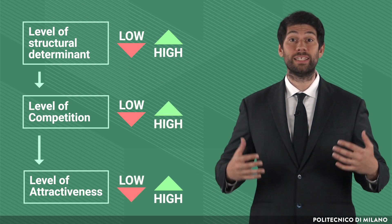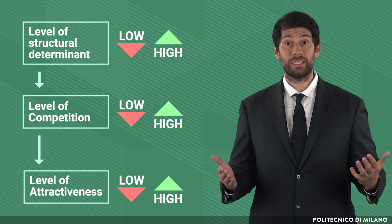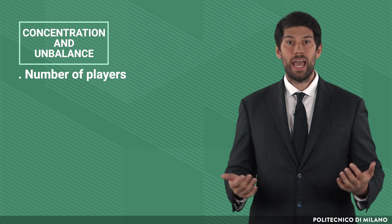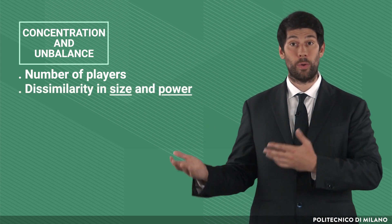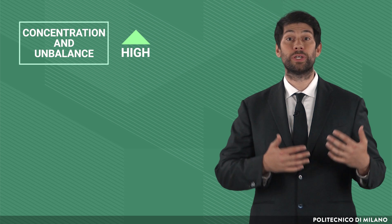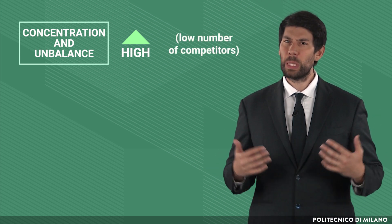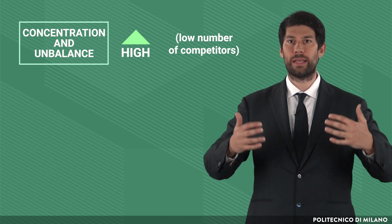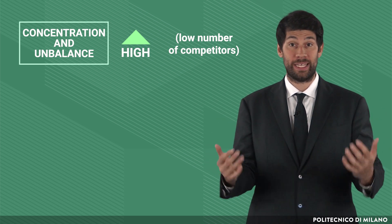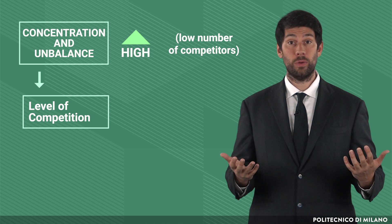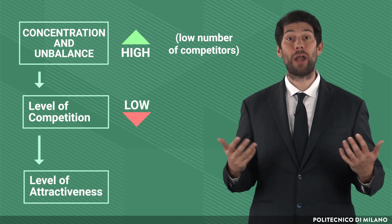The structural determinants driving intensity of internal rivalry act as follows. Concentration and imbalance considers the number of players operating in an industry and their dissimilarity in size and power. If concentration is high — that is, a low number of competitors populate the industry — and players are highly dissimilar, market leaders can impose discipline and play a coordinative role through devices like price leadership. As a result, competition will be low and attractiveness will be high.